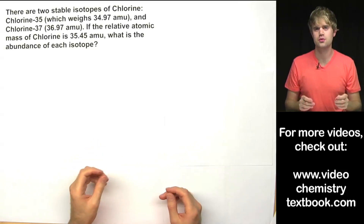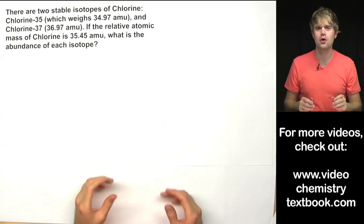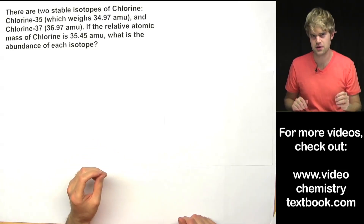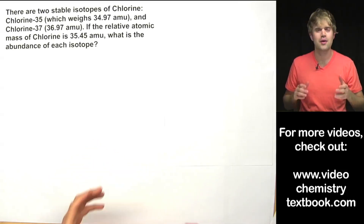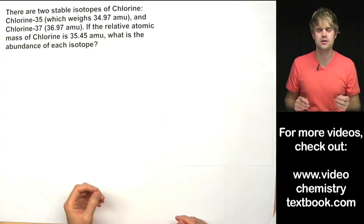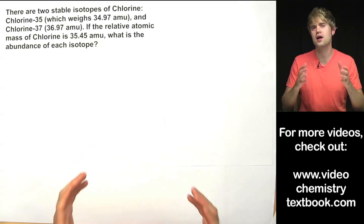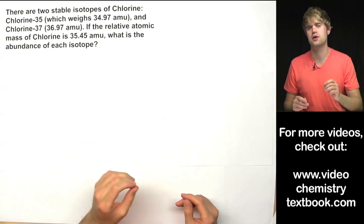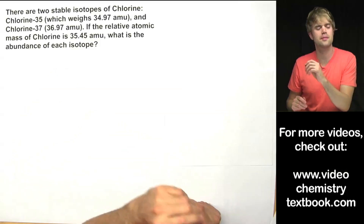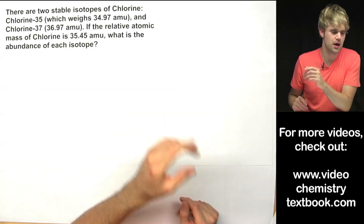Here we're going to do some problems where we already know what the atomic mass of an element is and we have to figure out what the percent abundance of various isotopes of that element are. Here's a typical question.